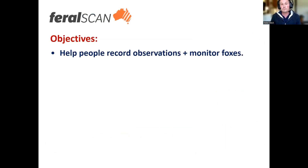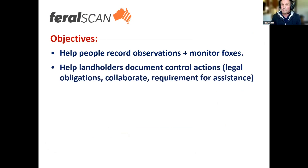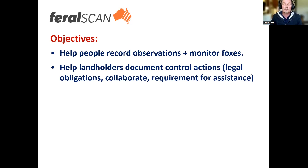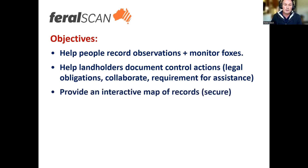The main objectives of FoxScan — and this applies to foxes — is to help people provide a very user-friendly, easy method for recording observations and problems around foxes in their local area, and to help people document their control activities. In some circumstances, people do so to comply with their legal obligations around fox control. There are certainly benefits from documenting control activities for collaborating with organizations or other landholders, and some use FoxScan to record control information as a requirement for seeking assistance. We also provide an interactive map for records, which we do securely.